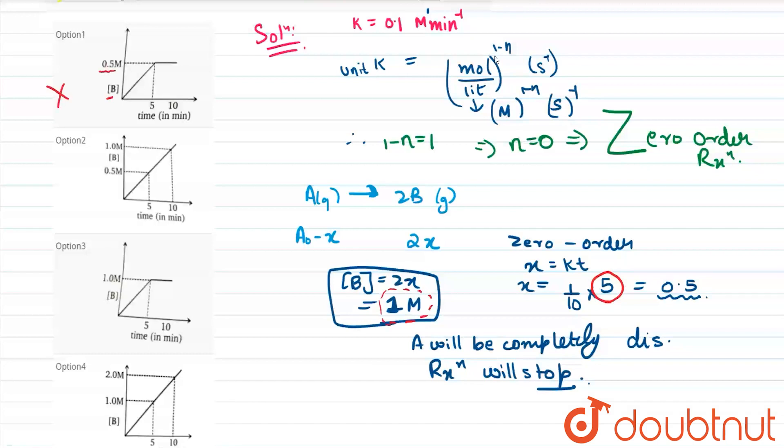In option 2 we are given that at 5 minutes 0.5 molar so it is again wrong.